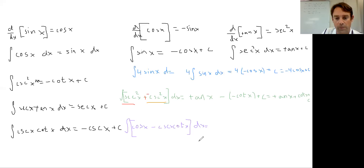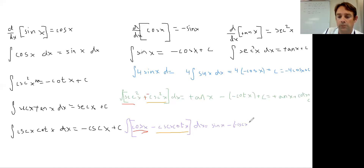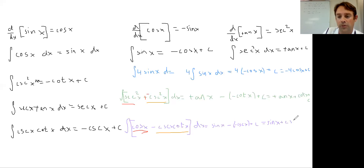For cos x minus csc·cot: the integral of cos x is sine x. The integral of csc·cot is negative cosecant, so the minus negative gives plus cosecant. Result: sin x + csc x + C. Never, ever forget the plus C — think of it as your best friend; never go anywhere without them.